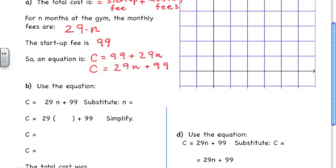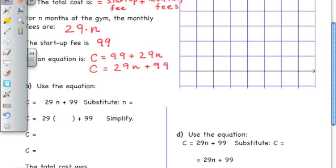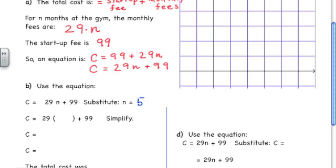So we start with our equation that we've written, 29N plus 99, and we're going to substitute N is equal to 5, because N represents the number of months that Kareem is using the gym. In our equation, we replace N with 5.